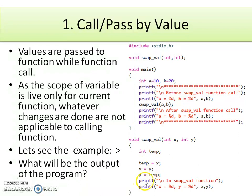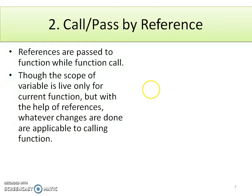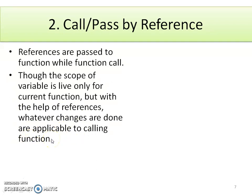To perform the same task with changes reflected back, we use the second type: call by reference (pass by reference). Here, references — which are nothing but addresses — are passed to the function. Though the scope of the variable is live only for the current function, with the help of references, whatever changes are done are applicable to the calling function.